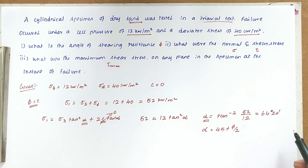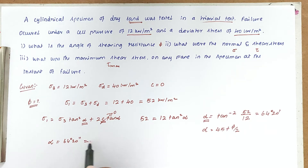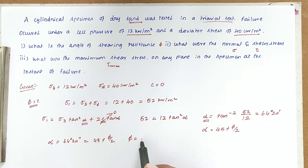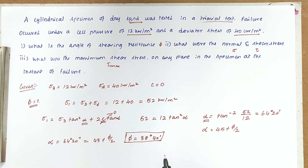Since α = 45 + φ/2, we have 64°20' = 45 + φ/2, which gives φ = 38°40'. This is the answer to the first part.